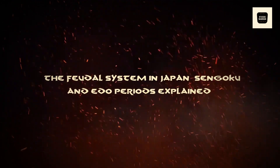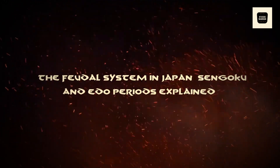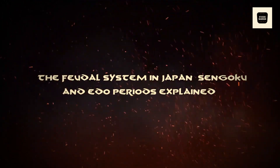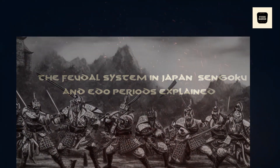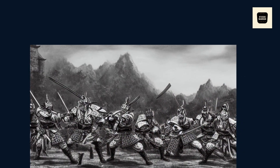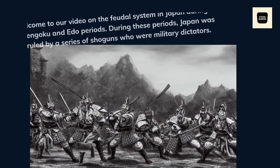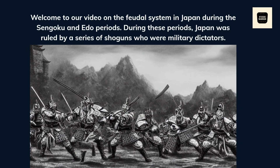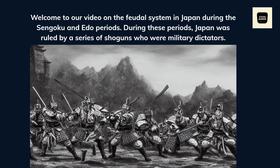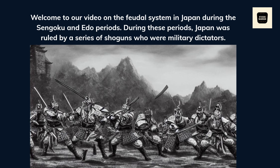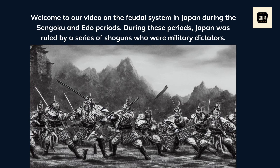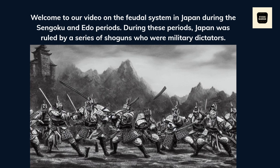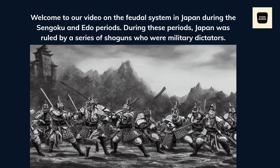The Feudal System in Japan: Sengoku and Edo Periods Explained. Welcome to our video on the feudal system in Japan during the Sengoku and Edo periods. During these periods, Japan was ruled by a series of shoguns who were military dictators.